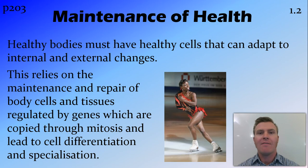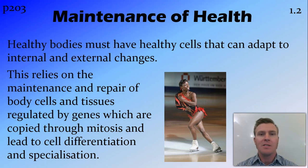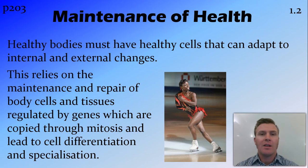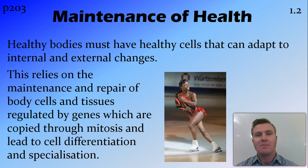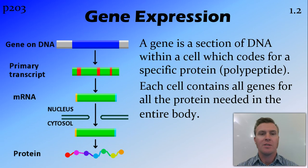In order to have a healthy body, you need healthy cells within that body. Those cells need to be maintained and repaired when necessary. Some of the mechanisms for doing this are genes and the regulation of genes — when they're turned on and turned off and expressed — the copying of genes through mitosis, as well as the cell differentiation and specialization that cells must undergo to do the job that they're supposed to do.